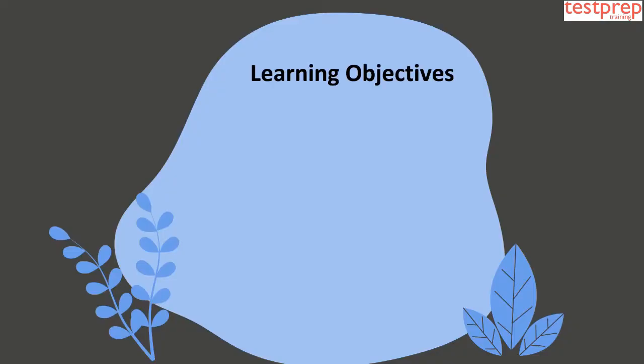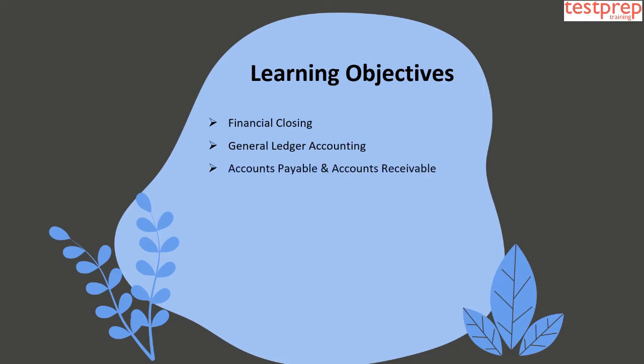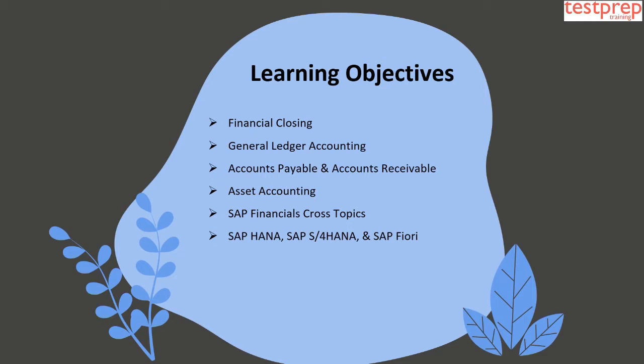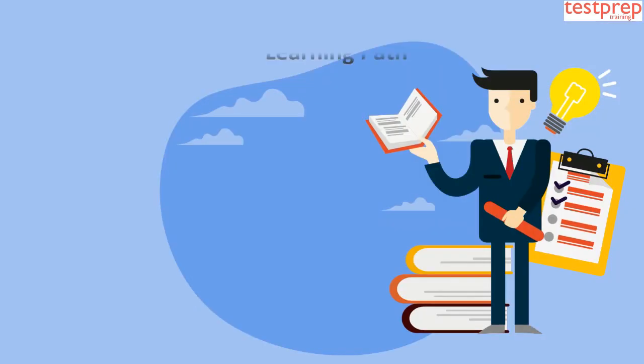Learning Objectives. The objectives for the exam are as follows: 1. Financial Closing. 2. General Ledger Accounting. 3. Accounts Payable and Accounts Receivable. 4. Asset Accounting. 5. SAP Financials Cross Topics. 6. SAP HANA, SAP S/4HANA, and SAP Fiori.